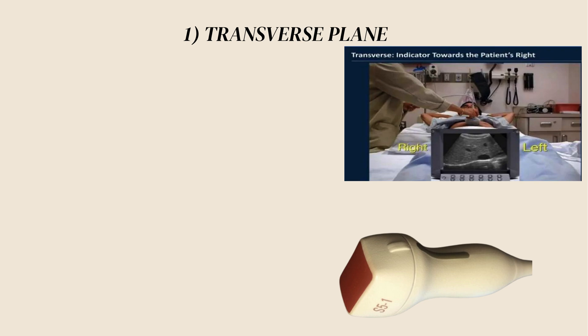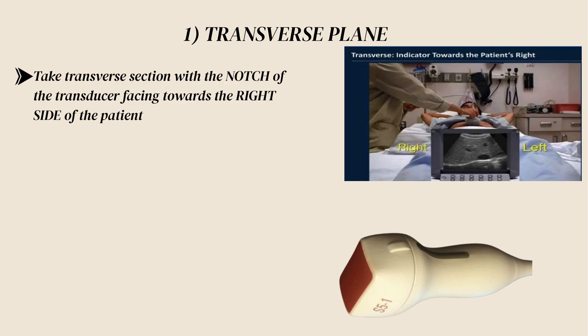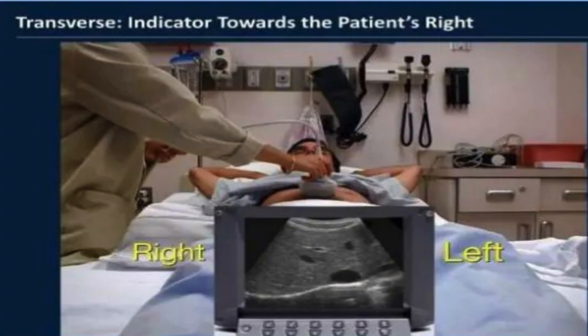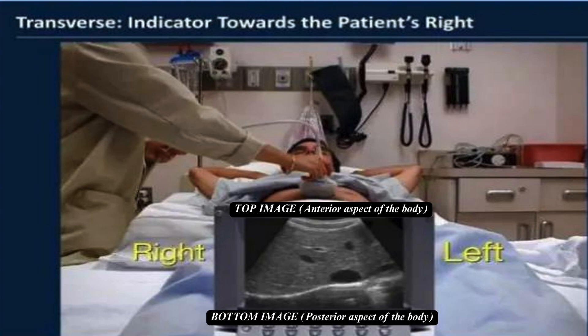In the transverse plane, we take a transverse section of the body with the notch of the transducer facing toward the right of the patient. The top of the image shows the anterior aspect of the body, the bottom shows the posterior aspect, and the left side of the image shows the right side of the body.